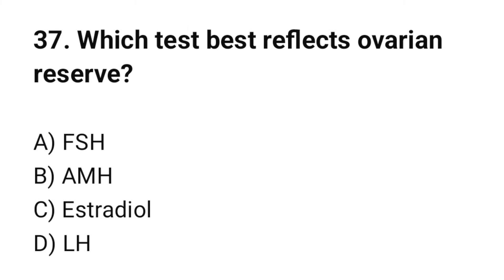Question number 37. Which test best reflects ovarian reserve? The correct option is B: AMH (Anti-Müllerian Hormone).